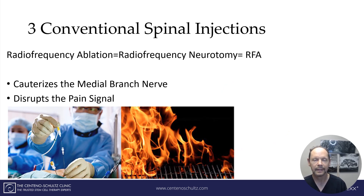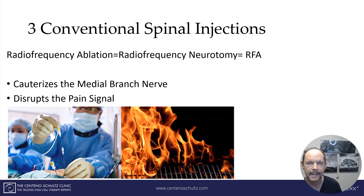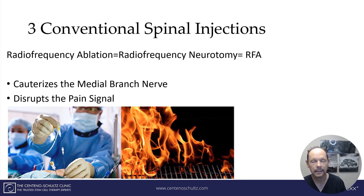The definitive conventional therapy for thoracic facet injuries is called radiofrequency ablation — otherwise known as radiofrequency neurotomy, or RFA. In essence, a specialized needle is put into the spine. Through the hollow needle, a probe is placed, and that probe is heated to a near boiling point. It basically cauterizes — it burns the medial branch. In doing so, it disrupts the pain signal from the injured facet to the brain.